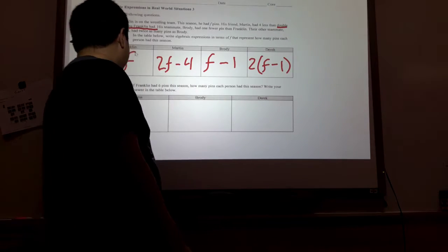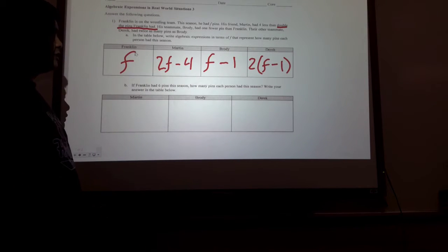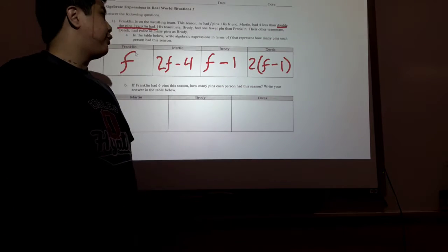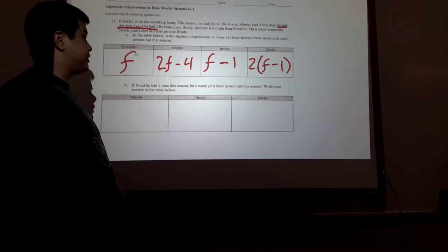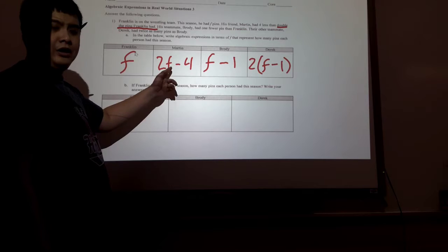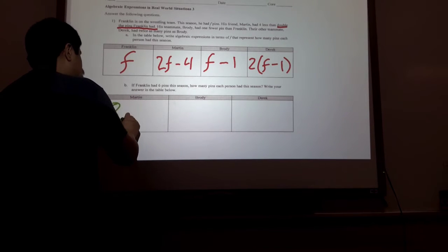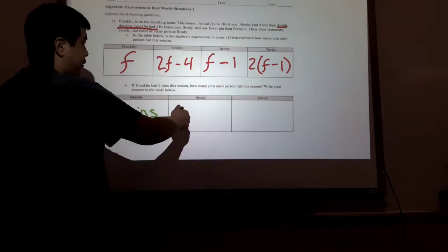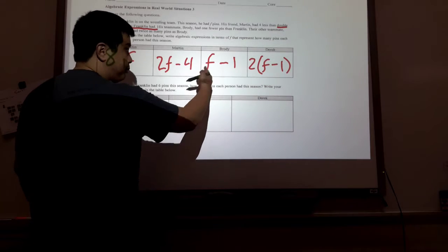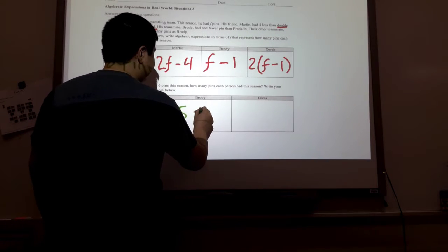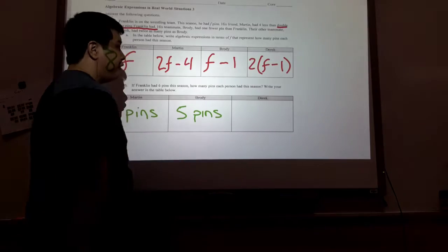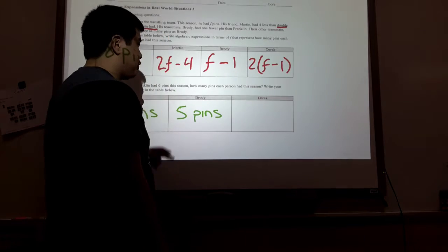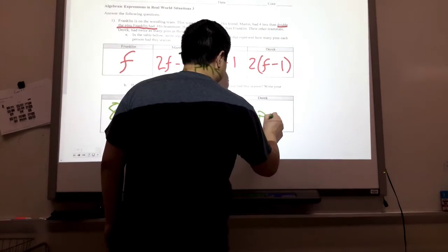The next question says: if Franklin had 6 pins this season, how many pins did each person have? Write your answer in the table below. We are simply going to substitute 6 in for F. For Martin's expression, we get 2 times 6 which is 12, minus 4 which is 8 pins. For Brody, we do 6 minus 1 which is 5 pins. For Derek, we put 6 in: 6 minus 1 is 5, times 2 is 10 pins. Please use units because we are evaluating a word problem.